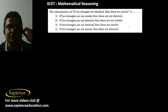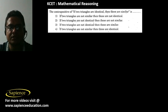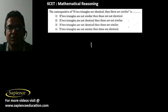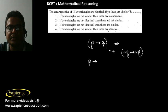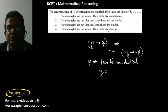Next, we have to find the contrapositive of the statement: 'if two triangles are identical, then they are similar.' The contrapositive of P then Q is: if not Q then not P. Here P is 'two triangles are identical' and Q is 'they are similar'.